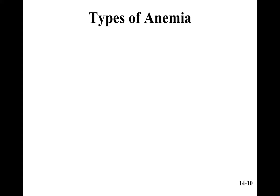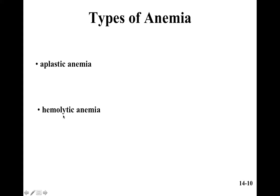Sometimes we don't have enough red blood cells, which gives us a type of anemia. All these types of anemia are based on what caused them and their results. Aplastic anemia is when the bone marrow is damaged, usually due to toxic chemicals or radiation exposure. Hemolytic anemia is when red blood cells get destroyed, due to acute toxic chemical exposure. Sickle cell anemia is caused by a defective gene.